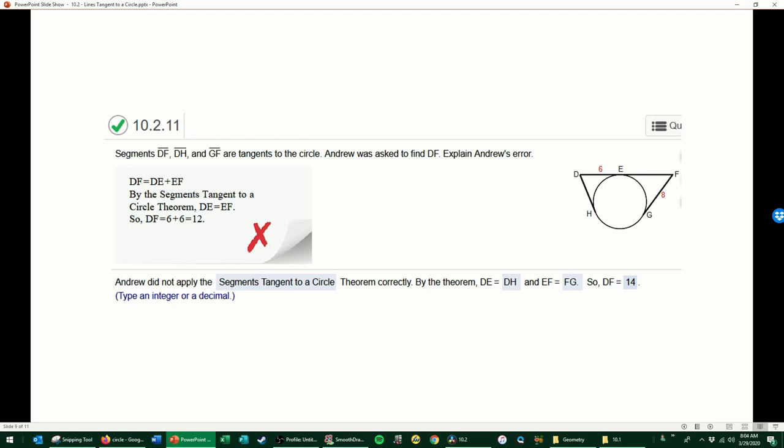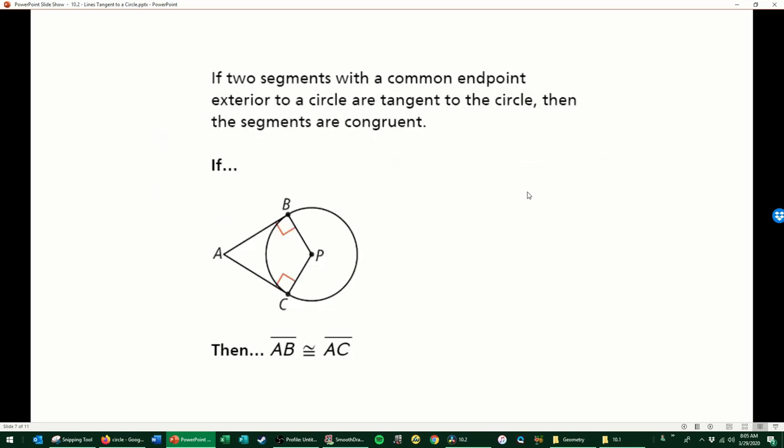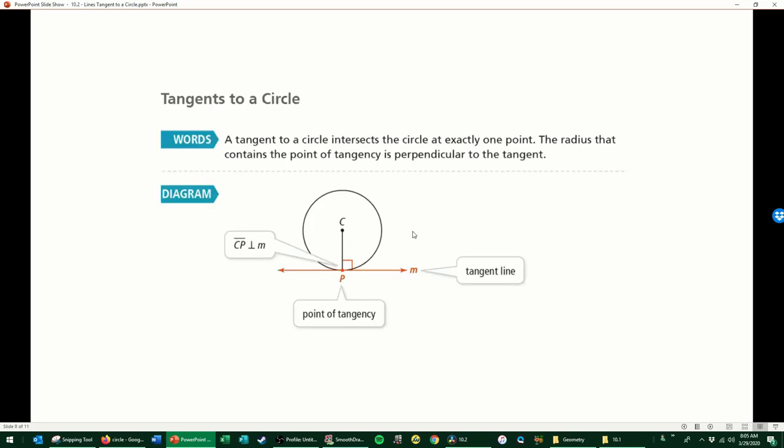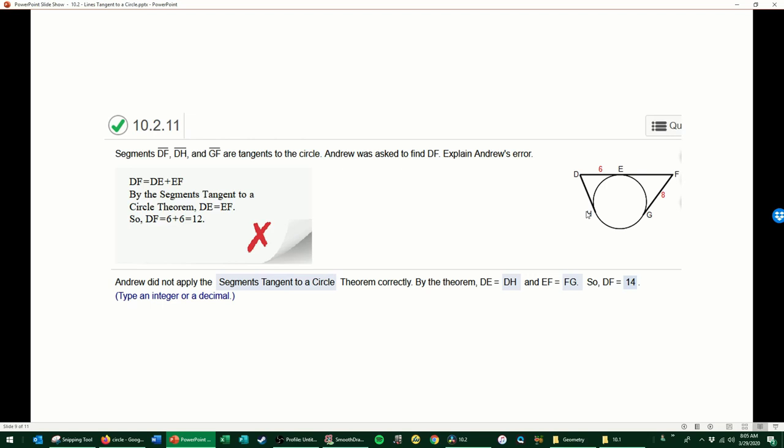Segments DF, DH, and GF are tangents to the circle. Luckily, they've given us that all three of these exterior lines are tangent at points G, H, and E. Andrew was asked to find DF, the full length of this line. Explain Andrew's error. Andrew said to find DF, we take DE plus EF. I would agree with that, that's the segment addition postulate. By the segments tangent to a circle theorem, DE is equal to DF. Well, that's not quite true, is it?